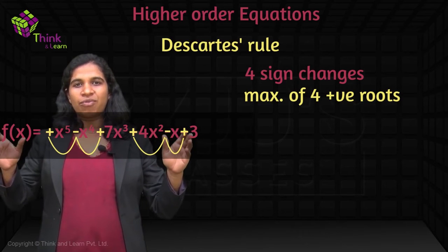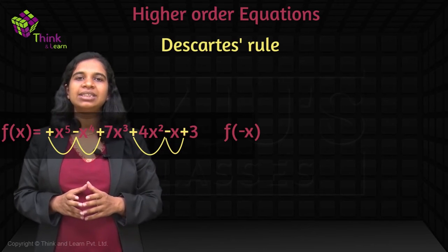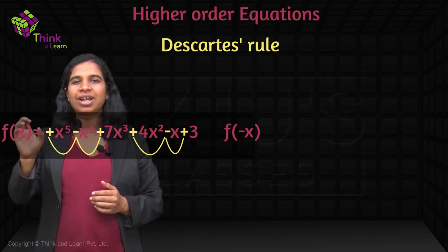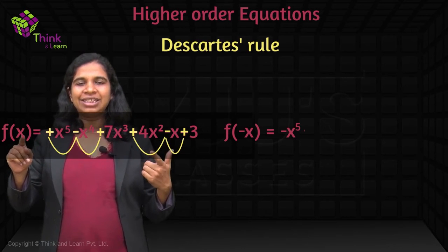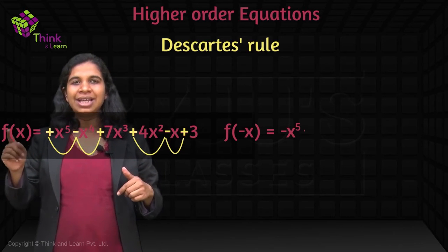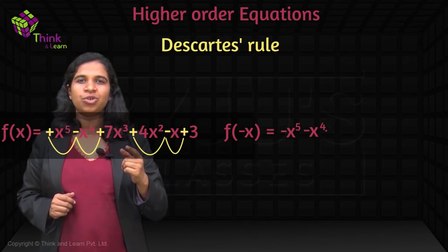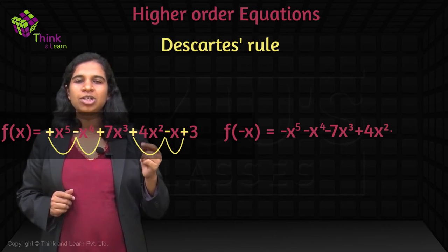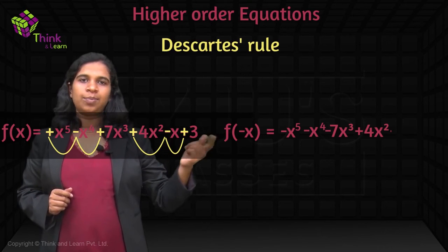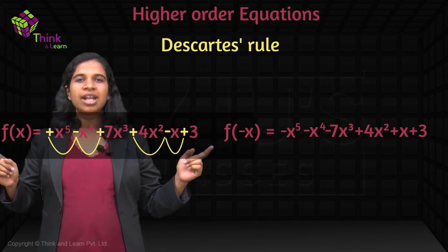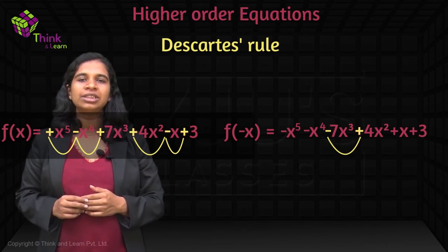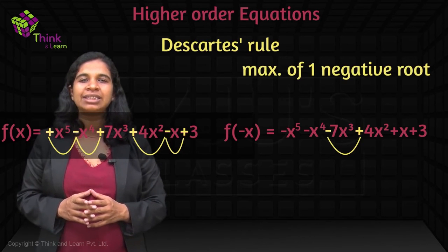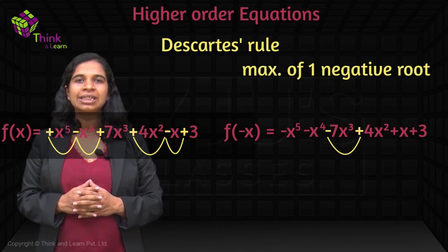Now this was f(x). If I call this as f(x), I can find f(minus x) by replacing every x with minus x. All the odd-power terms will change signs; all the even-power terms will retain their signs. So f(minus x) becomes: minus X raised to 5, minus X raised to 4, minus 7X cubed, plus 4X squared, plus X, plus 3. Now if you observe the sign changes, there is only one sign change, which means this equation has a maximum of one negative root. The number of sign changes in f(minus x) tells you the maximum number of negative roots. Since reducing by 2 would give a negative number, you can be sure this equation has exactly one negative root.